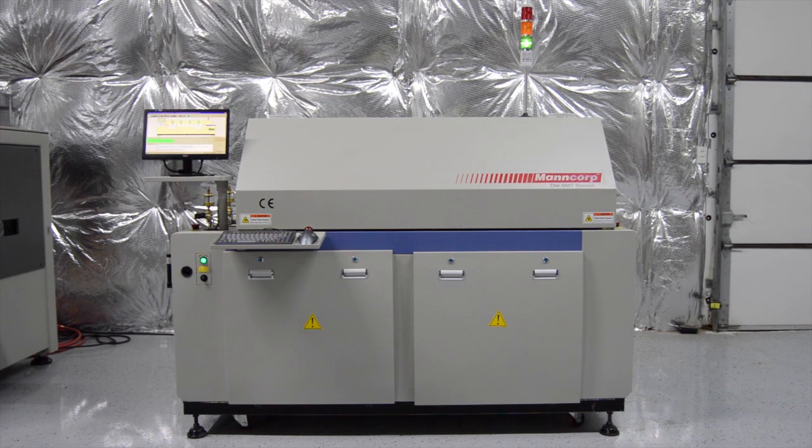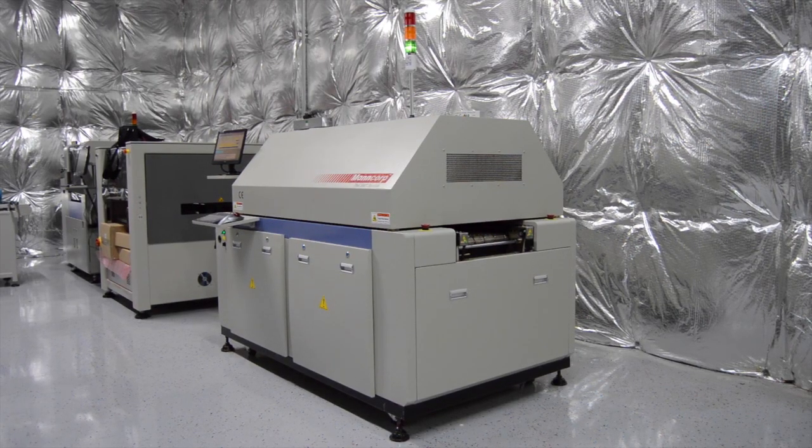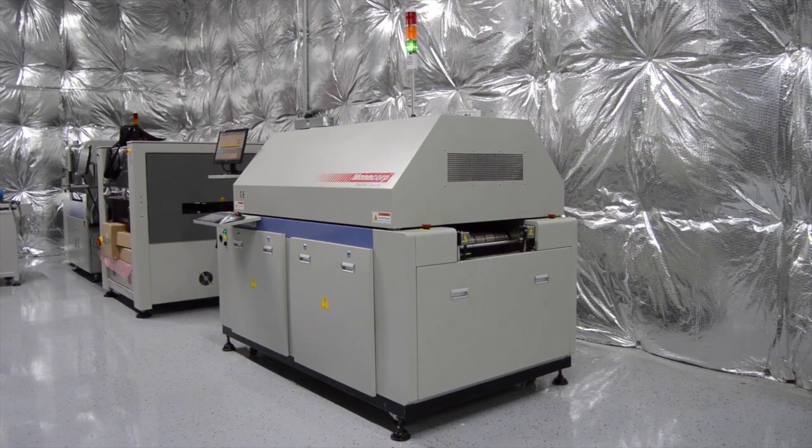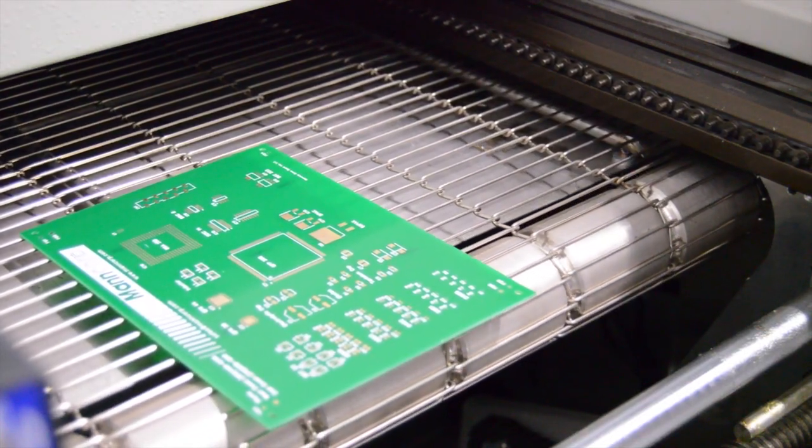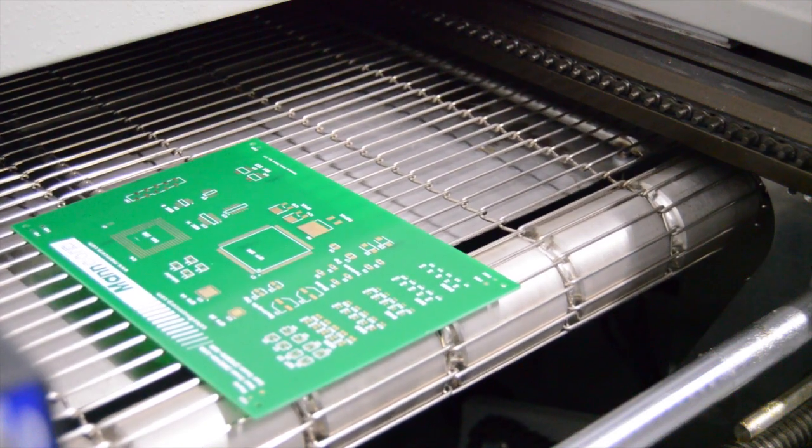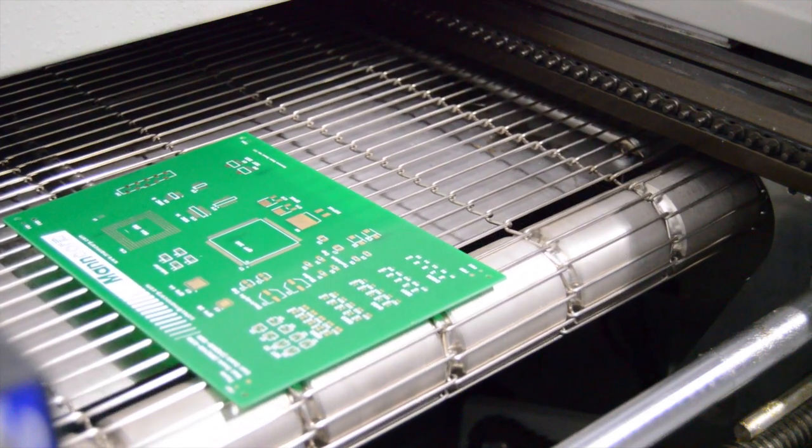Mancorp's CR4000C is a perfect fit for assemblers who want a compact, medium volume reflow with many of the profiling and performance characteristics of larger ovens. At just over six and a half feet long, it is ideal for tight manufacturing spaces.